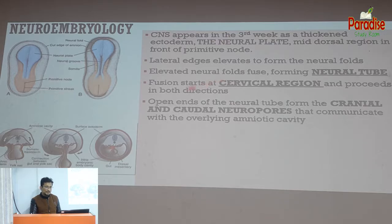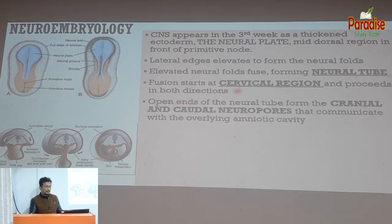The open ends of the neural tube are called cranial neural pores. The neural tube initially communicates via these neuropores, and their abnormal development results in neural tube defects.